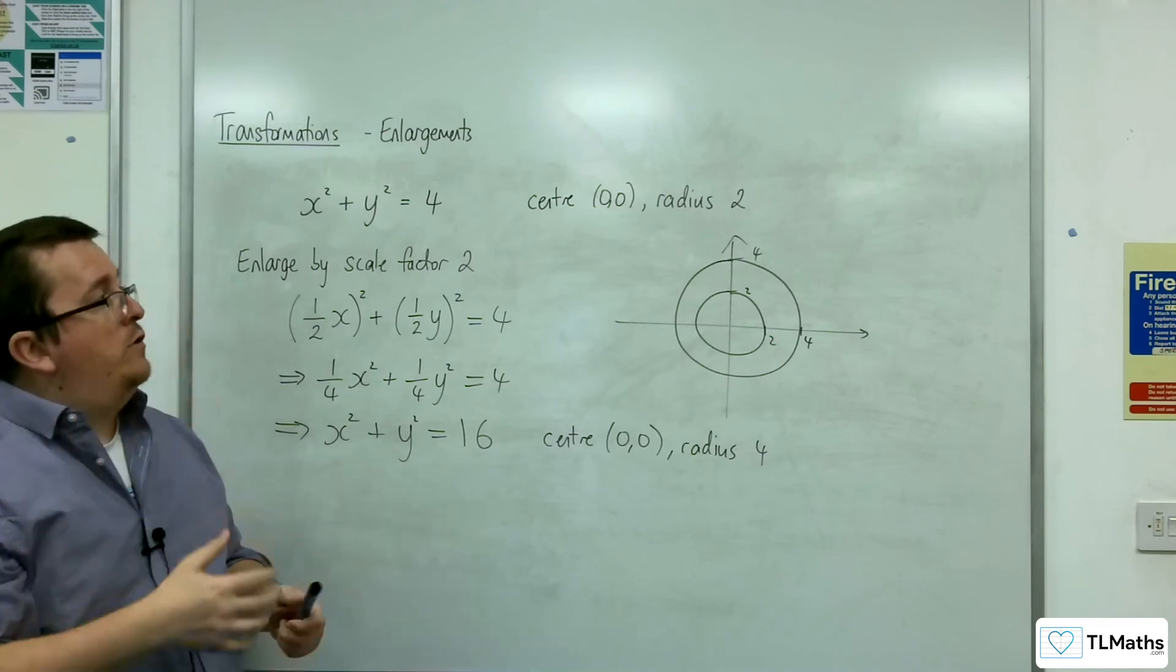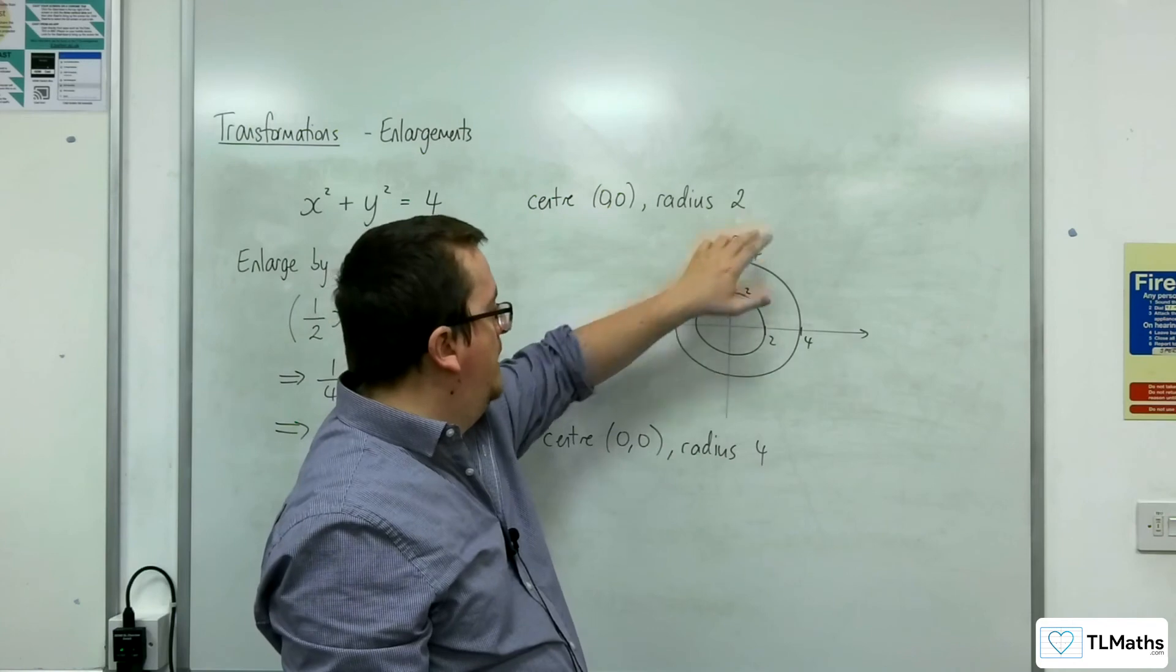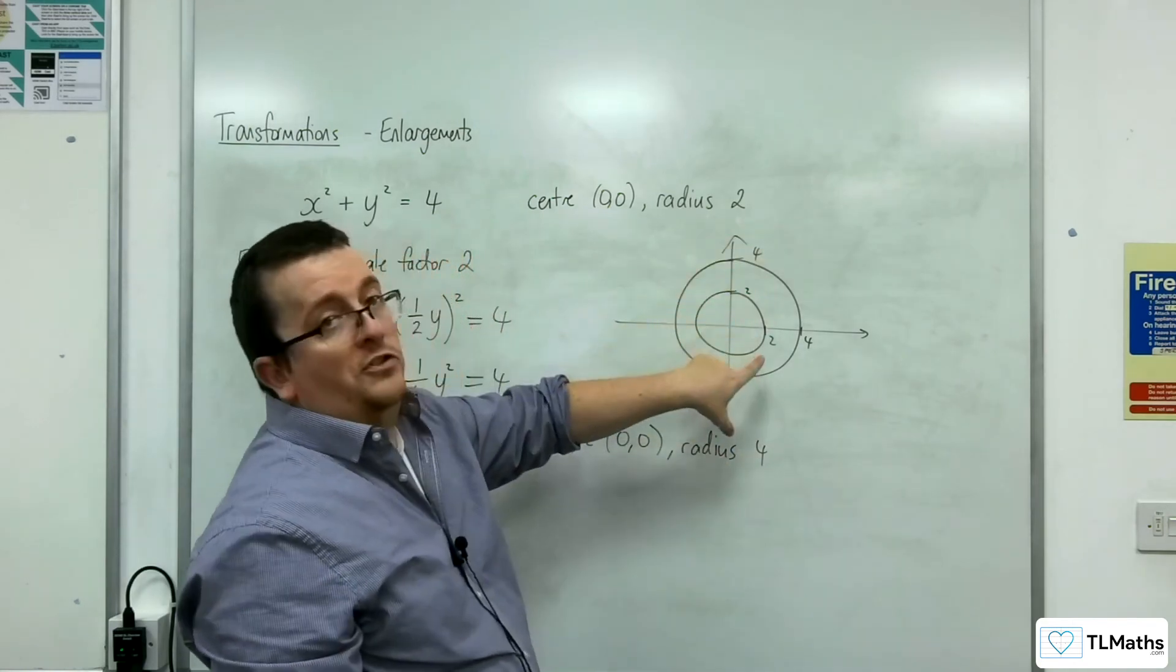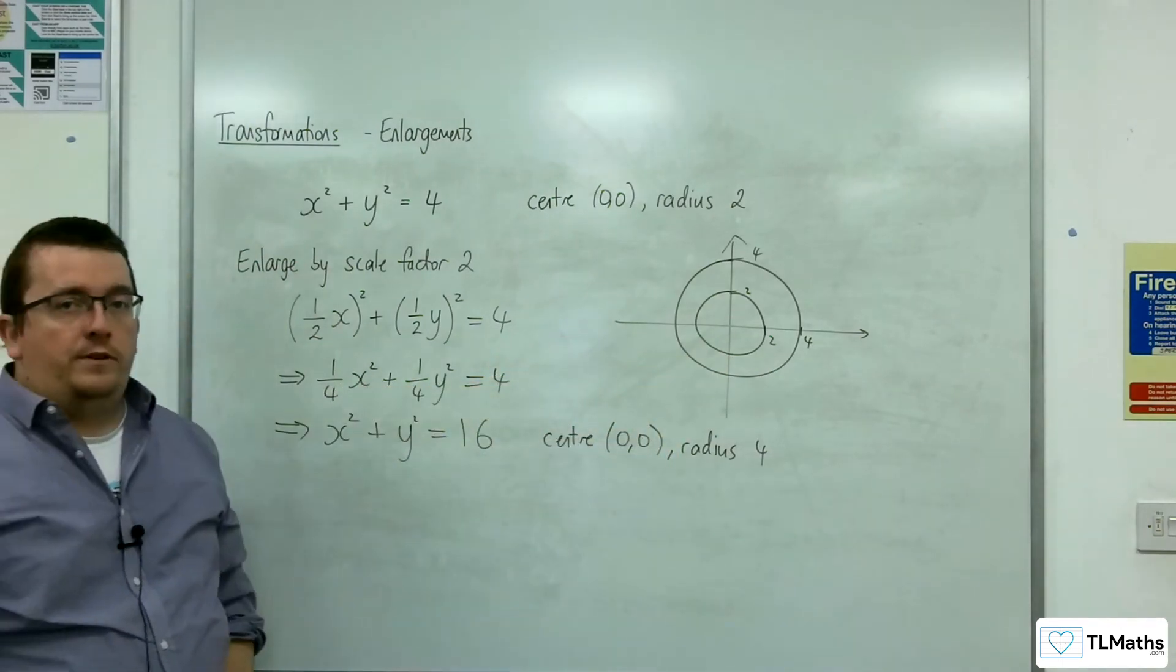Because the area would have been pi times r squared, so 4 pi for the small circle and 16 pi for the larger circle. So the larger circle has 4 times the area.